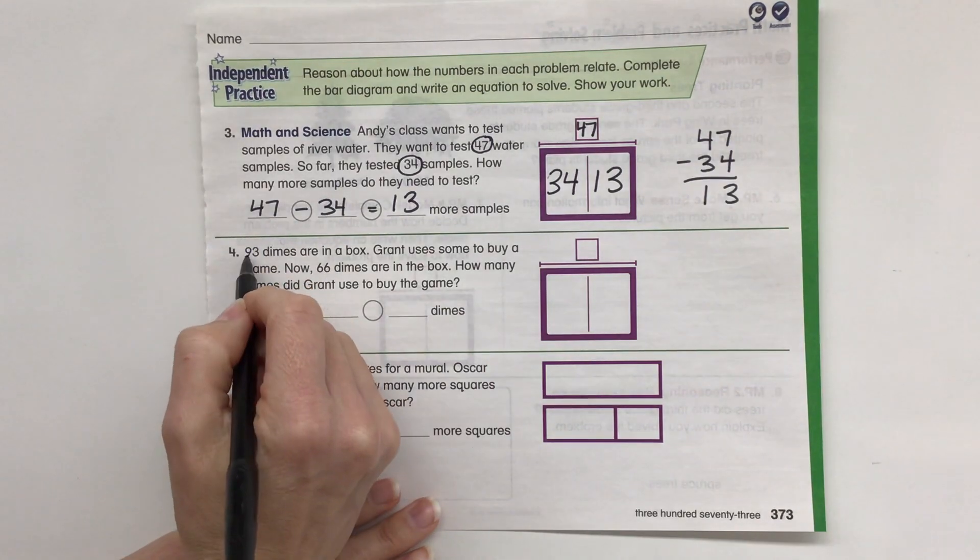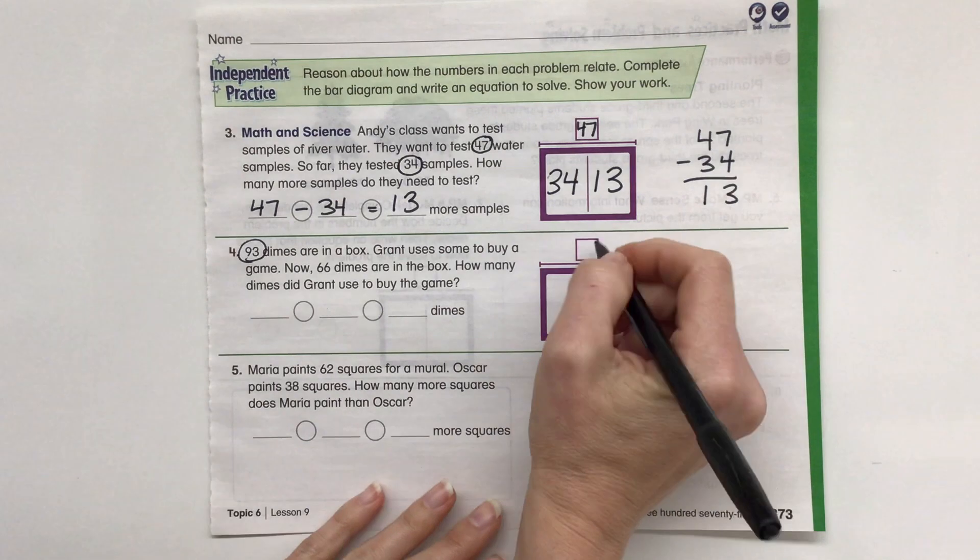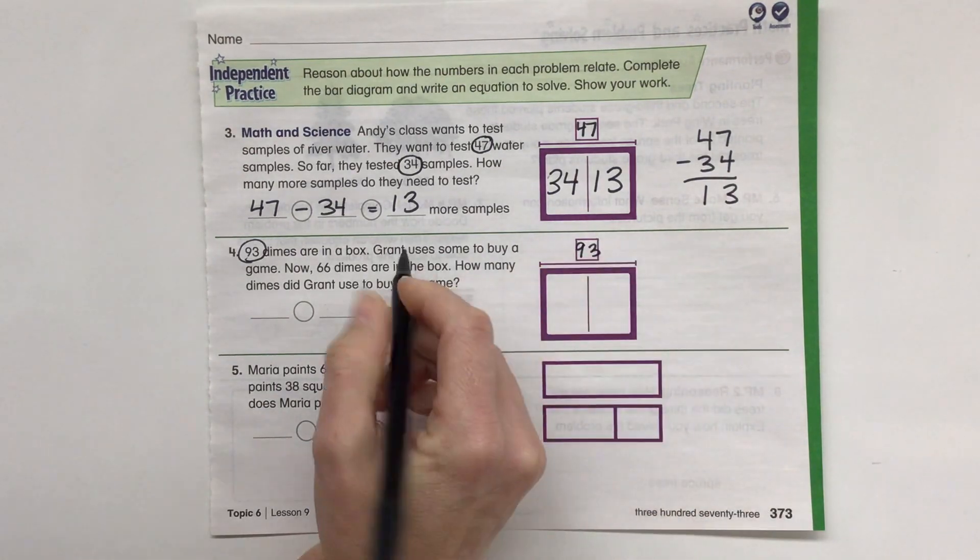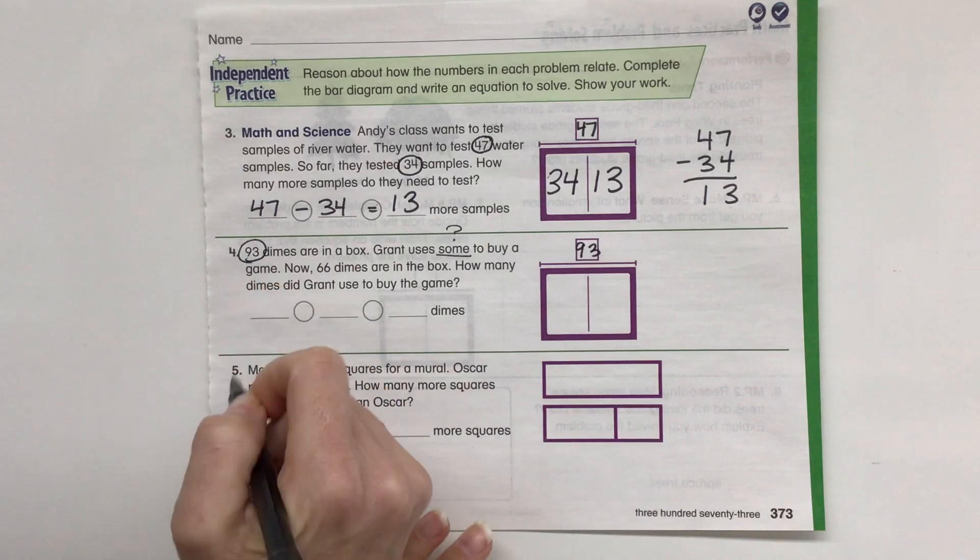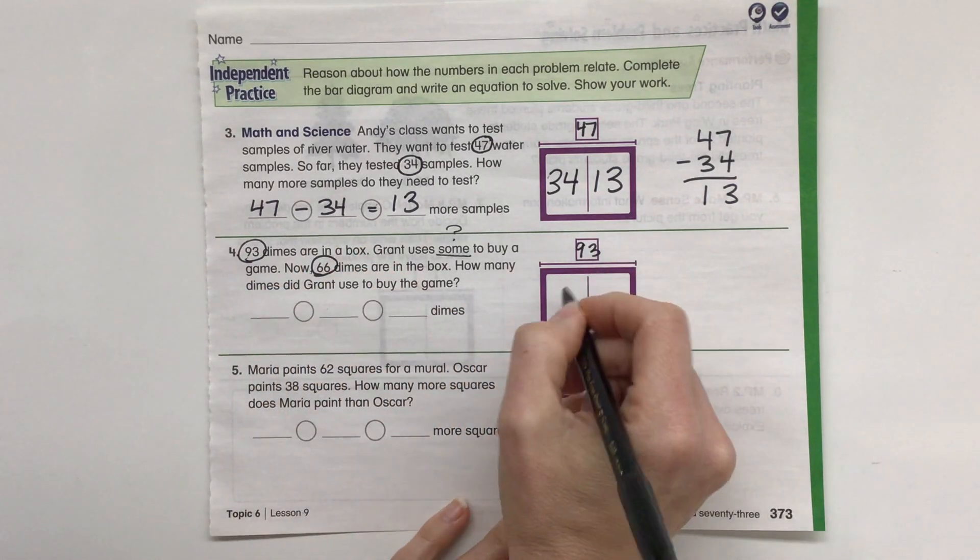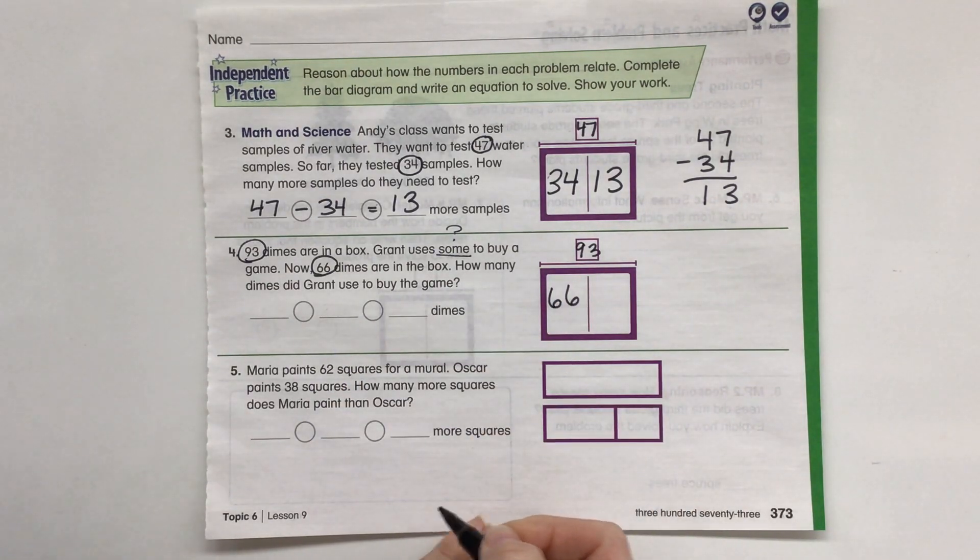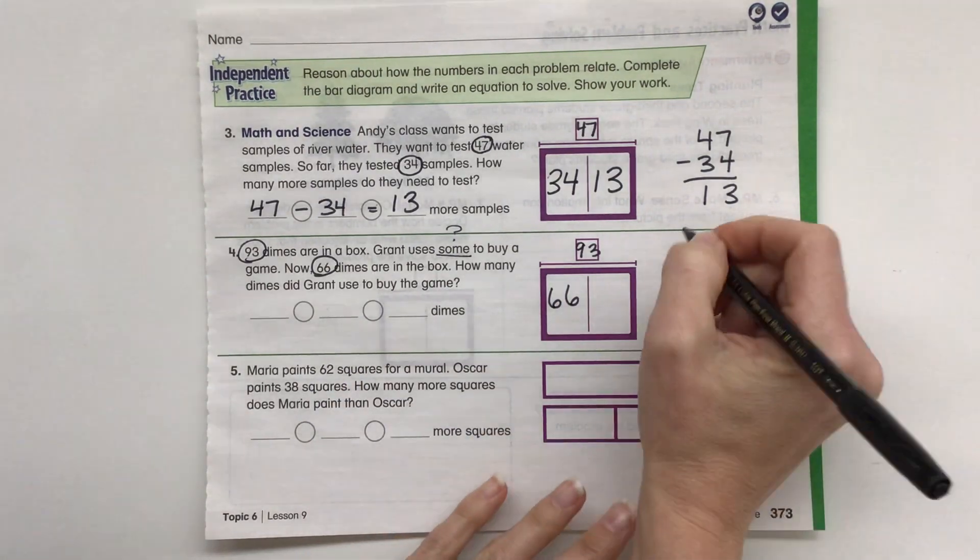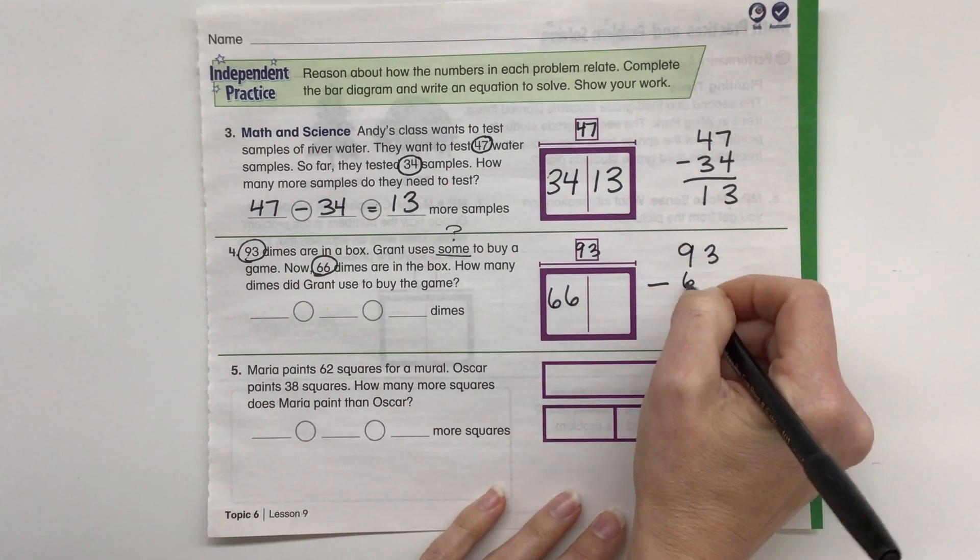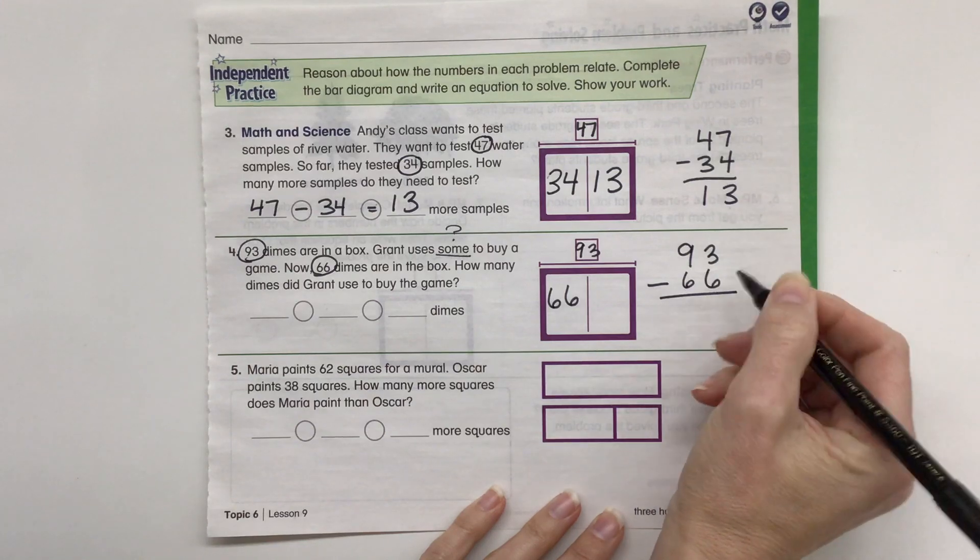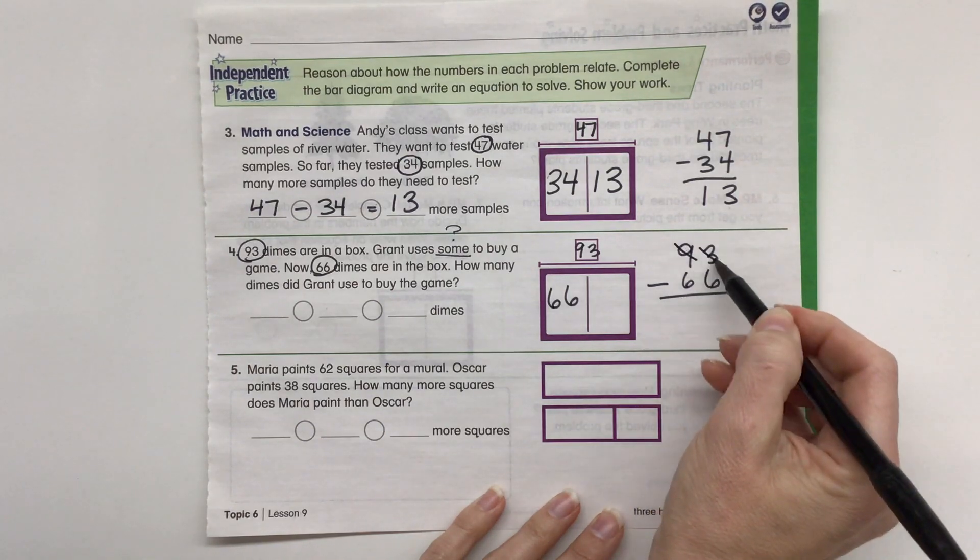Let's look at number four. Ninety-three dimes are in a box. So we have a total of 93 dimes. Grant uses some, how many? We don't know, to buy a game. Now 66 dimes are in the box. How many dimes did Grant use to buy the game? So we had a total of 93. He used something, and we had 66 left over. So we're going to use that 66. 3 minus 6 won't work, so we have to regroup.